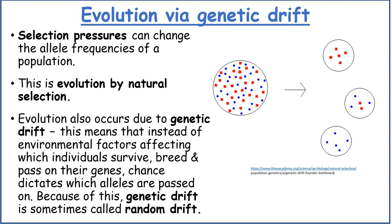Selection pressures can change the allele frequencies of a population — this is evolution by natural selection. Evolution also occurs due to genetic drift. This means that instead of environmental factors affecting which individuals survive, breed and pass on their genes, chance dictates which alleles are passed on. Because of this, genetic drift is sometimes called random drift.